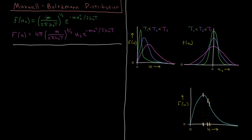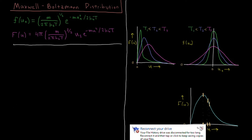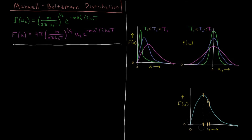There's a pre-factor which involves the particle's mass, Boltzmann factor, temperature, etc. — notice the square root up there. And then the Gaussian e to the minus mass of particle times velocity component in that direction squared, divided by 2 times Boltzmann constant times temperature.